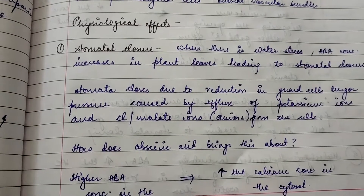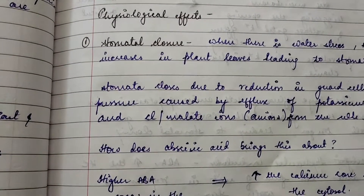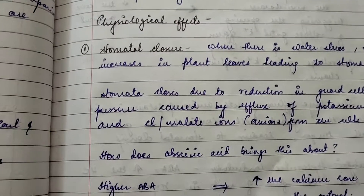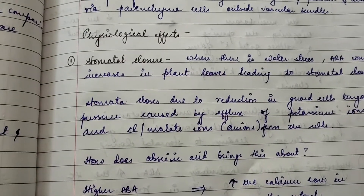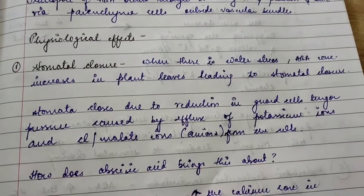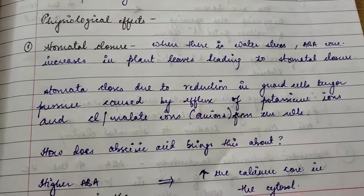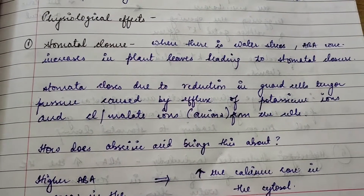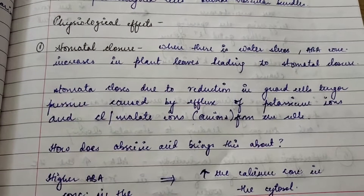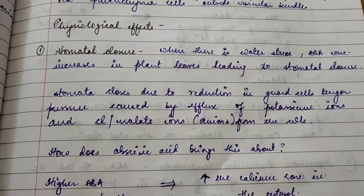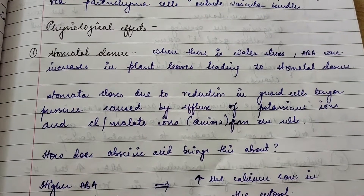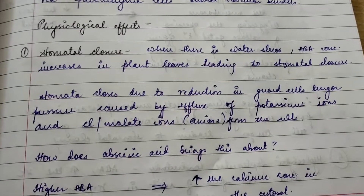We have already made a full video on transpiration, stomatal opening and stomatal closure processes, turgor pressure and water pressure — go watch that for full detail. Here it will be a short process. Basically, when there is water stress, abscisic acid concentration increases in plants. Whenever there is water stress, abscisic acid concentration rises and due to that stomata close. Stomatal closure takes place due to reduction in guard cells' turgor pressure.